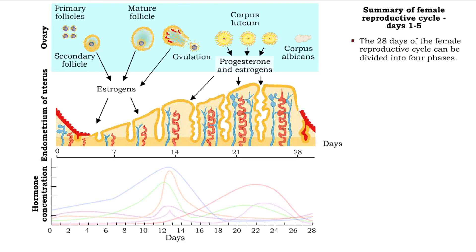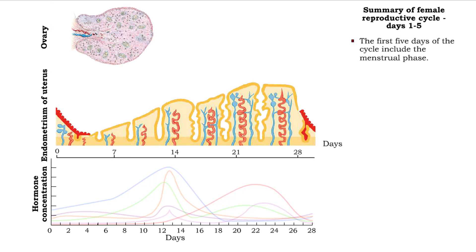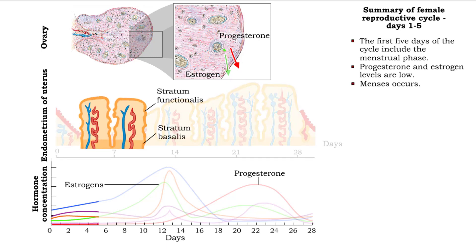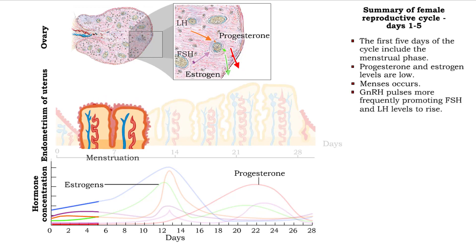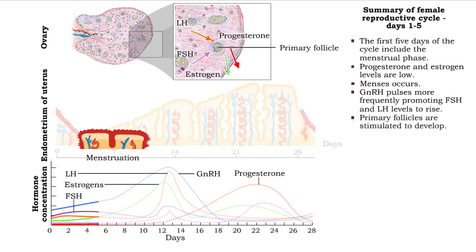The 28 days of the female reproductive cycle can be divided into 4 phases. Days 1 through 5 of the monthly cycle are the menstrual phase. Low levels of progesterone and estrogen allow for the shedding of the stratum functionalis of the endometrium. These low levels allow the hypothalamus to release gonadotropin-releasing hormone, which in turn stimulates the release of follicle-stimulating hormone and luteinizing hormone from the anterior pituitary. Increasing levels of follicle-stimulating hormone stimulate follicular development.